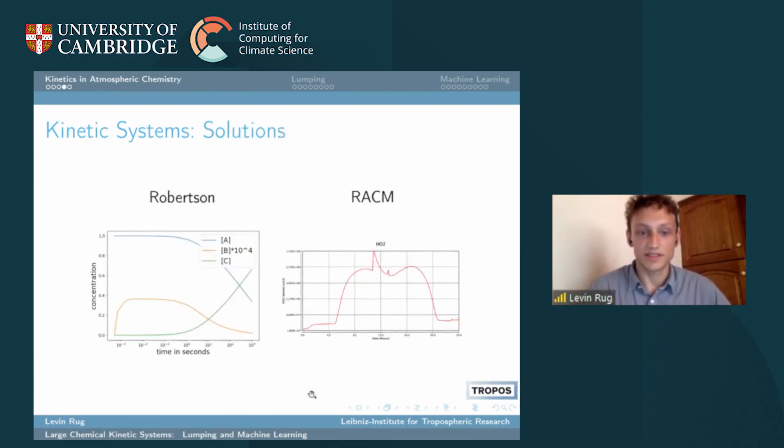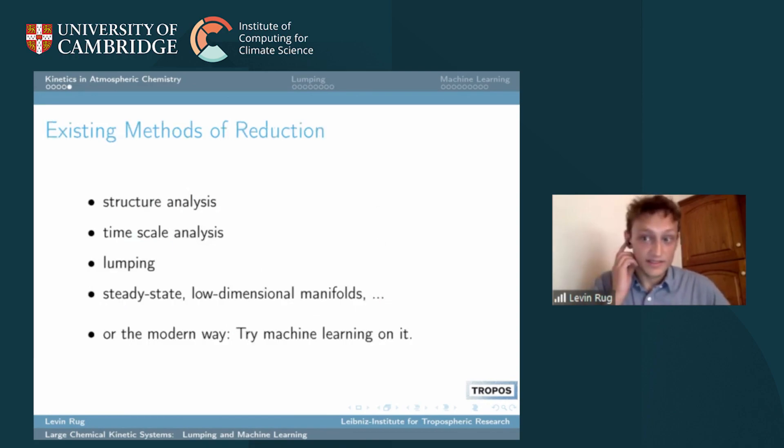The solutions of such systems can look something like this. This is the Robertson mechanism on the left-hand side and we see this stiff behavior, so the concentration of B is very small but still important, and the time scales vary in magnitudes of order. A mechanism capable of displaying atmospheric chemistry in reality is the Wrecking mechanism, and you see this completely non-linear behavior on the right inside. For this reason, reduction of this mechanism is an old problem and there are many methods to do it.